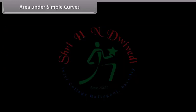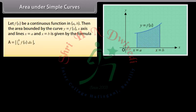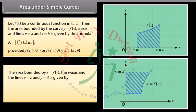Area under simple curves. Let f(x) be a continuous function in [a, b]. Then the area bounded by the curve y = f(x), the x-axis, and the lines x = a and x = b is given by the formula: A = |∫[a to b] f(x) dx|, provided f(x) ≥ 0 or f(x) ≤ 0 for each x in [a, b].